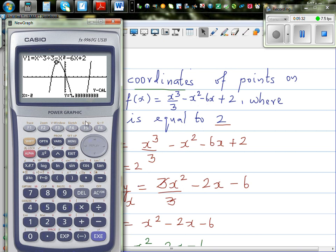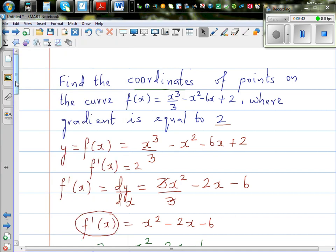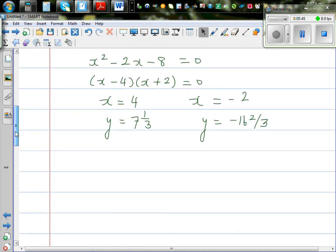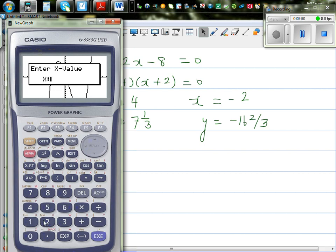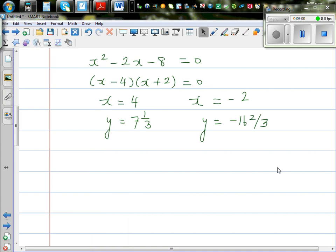G solve again when x is equal to 2, am I right, or negative, which are the points, I keep forgetting. 4, negative 2 and 4. So g solve when x is equal to 4. When x is equal to 4, it's somewhere underneath here. So here at these two points your gradient is 2.